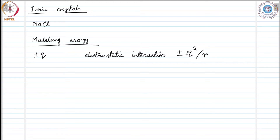The repulsive and attractive interactions that we saw in the case of inert gas are also present here; however, that interaction is much weaker than the ionic interaction. So the main contributor to the binding of the ionic crystal is electrostatic energy, and that electrostatic energy is called the Madelung energy.